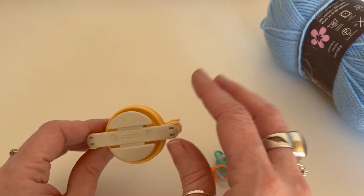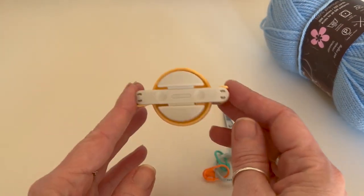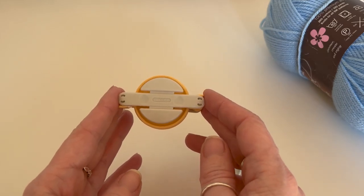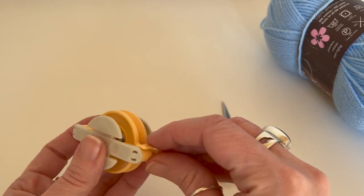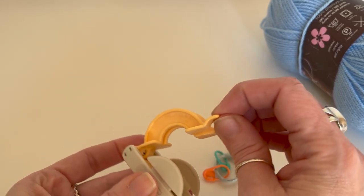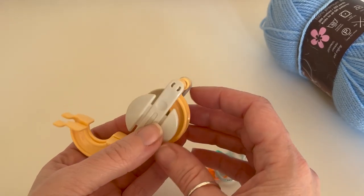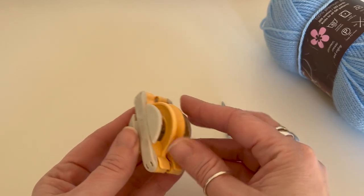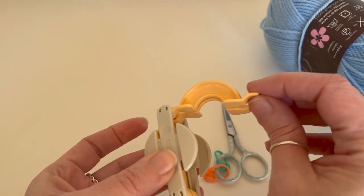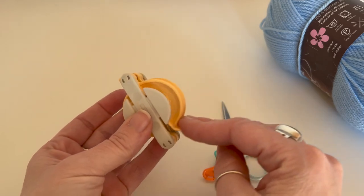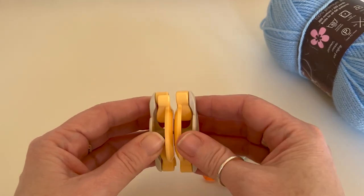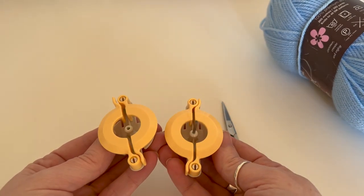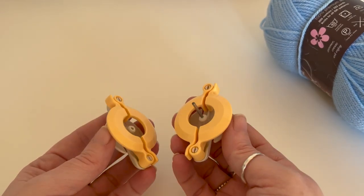We're going to start with the anatomy of a pom-pom maker because people are like how do you use them. So this is what they look like and these two bits here come open. It's exactly the same on the other side, these two bits come out like so and it's got a little bit of a gap in the middle and you can pull them apart like this.